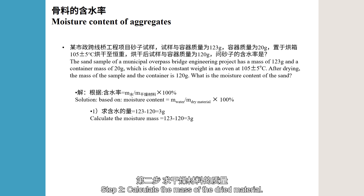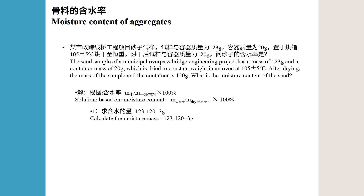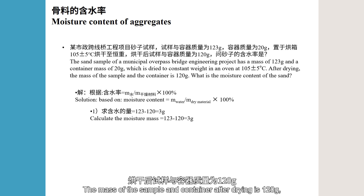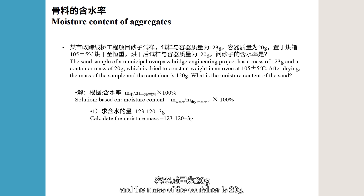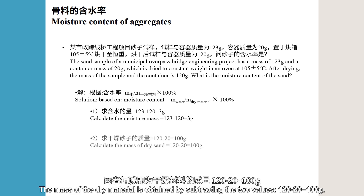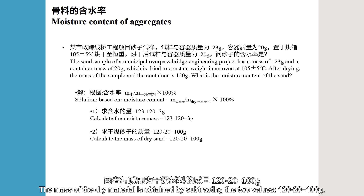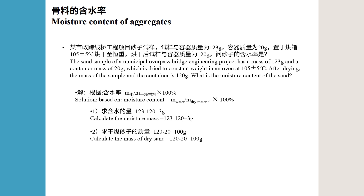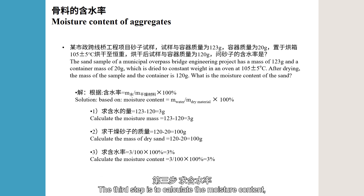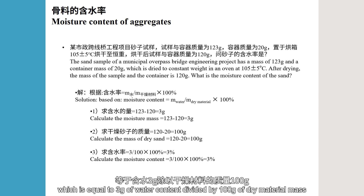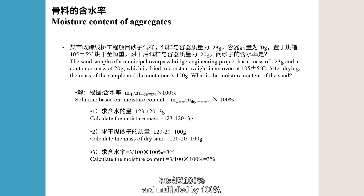Step 2: calculate the mass of the dried material. The mass of the sample and container after drying is 120 grams, and the mass of the container is 20 grams. The mass of the dry material is 120 minus 20, which equals 100 grams. Step 3: calculate the moisture content, which is equal to 3 grams divided by 100 grams, multiplied by 100%, which equals 3%.